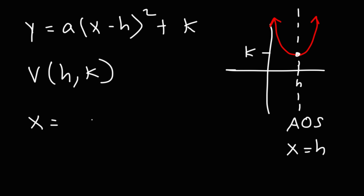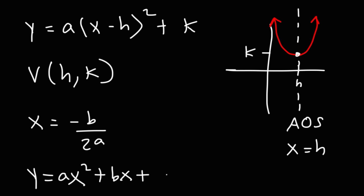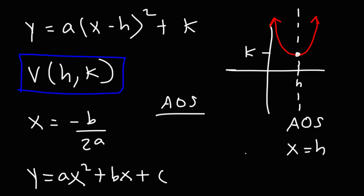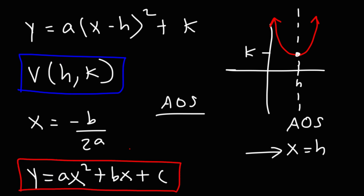This vertex is also the axis of symmetry. You can find the axis of symmetry using the formula negative b over 2a, but this works when the quadratic equation is in standard form. If it's in vertex form, the axis of symmetry is simply x equals h. If it's in standard form, use the formula negative b over 2a.